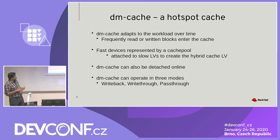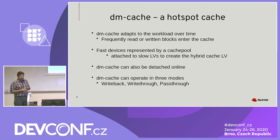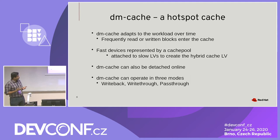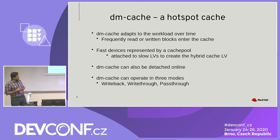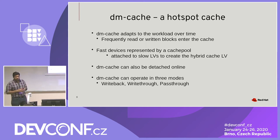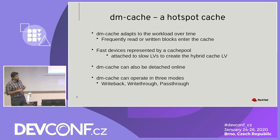There are three modes available. Write back mode signals I/O complete to the application when it reaches the fast device only — you need not wait for it to be written to the slower device. Write through mode, which is the default in RHEL, marks I/O complete only after it reaches both devices, so it's beneficial only for read caching, not write caching, but it is safety-first. Pass through mode is not used very often — it's for when the cache is not coherent and you want to activate the device without actually using the cache, so everything bypasses the cache.